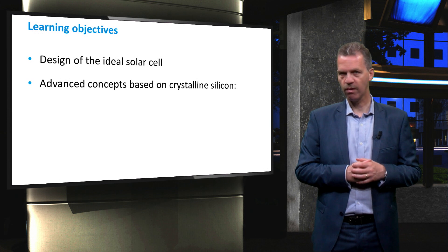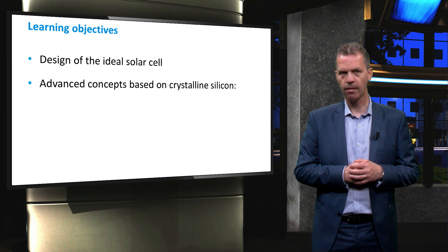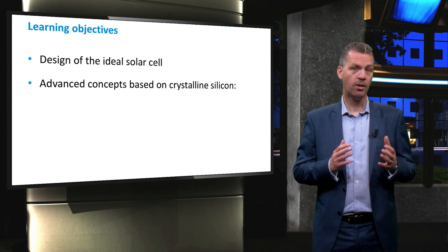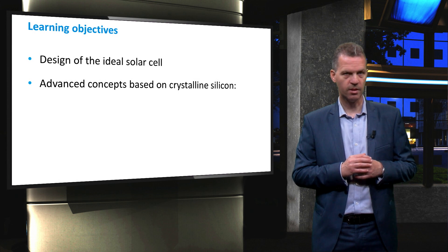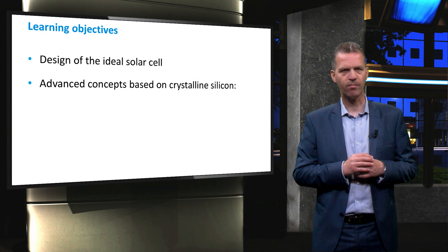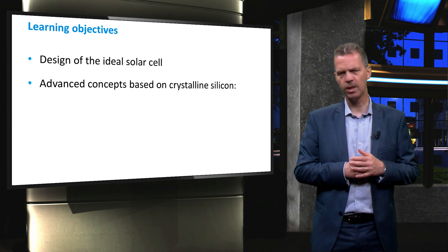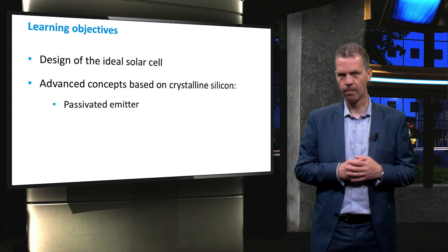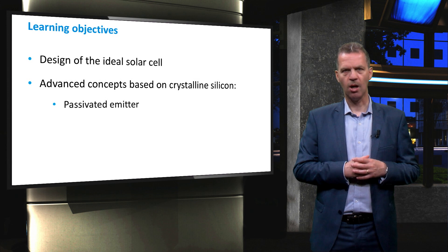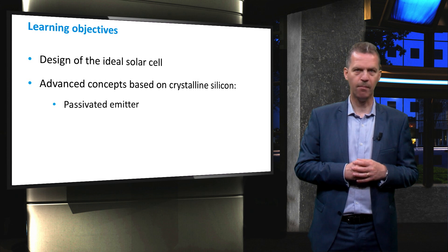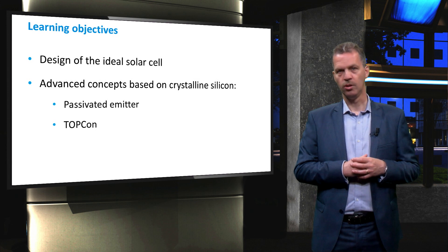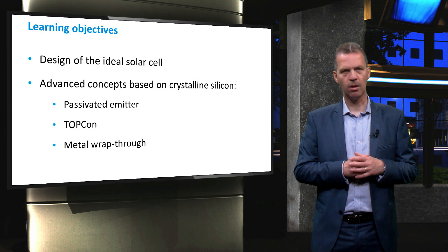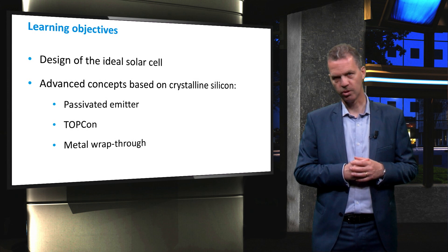Next, we will move our focus to advanced concepts for solar cells based on crystalline silicon that deviate from the standard solar cell design. Note that many different design concepts for crystalline silicon based solar cells have been published in literature, and in this video we cannot discuss them all, but we have selected some interesting concepts for you. These technologies are the series of passivated emitter solar cells, the TOPCON technology and the metal wrap-through solar cell. In the next video, we will discuss some other important solar cell designs.